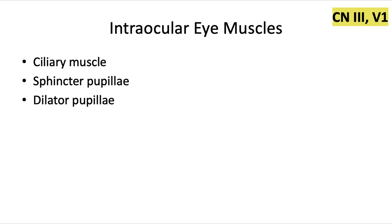Now let's talk about the intraocular eye muscles. These are rings of smooth muscle that function to change the shape of the eye — changing the lens and the pupil, just like our previous intrinsic muscles. These muscles are innervated by cranial nerve 3 as well, with one exception that's innervated by V1.